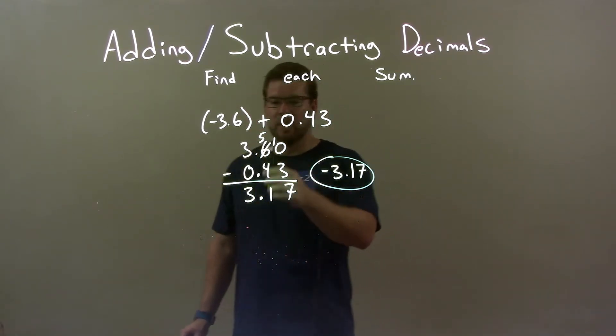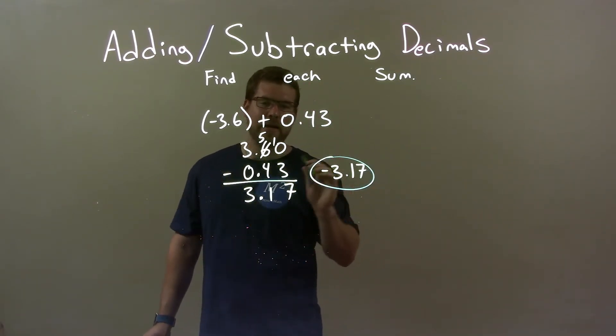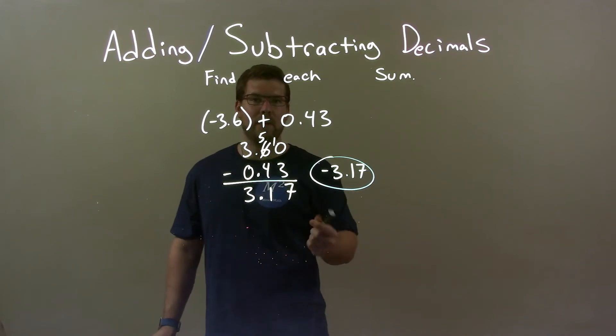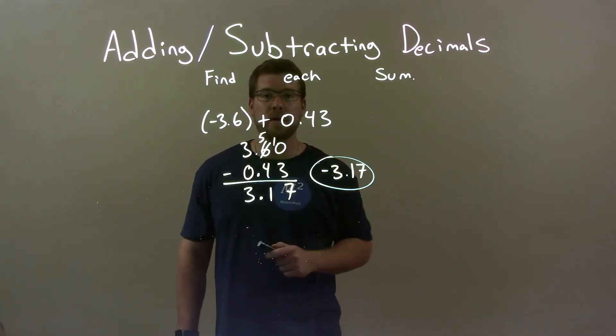And then, knowing that my final answer had to be negative. In doing that, I got 3.17, but again, slapped on that negative because we knew it had to be negative, so our final answer here again is negative 3.17.